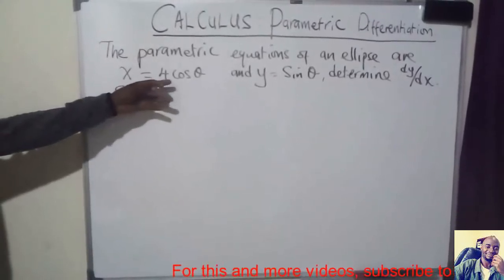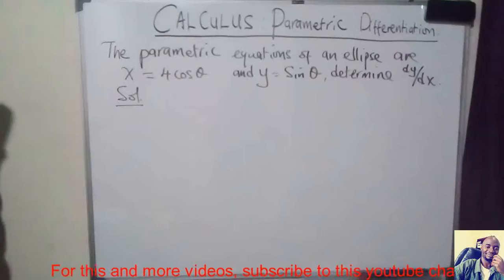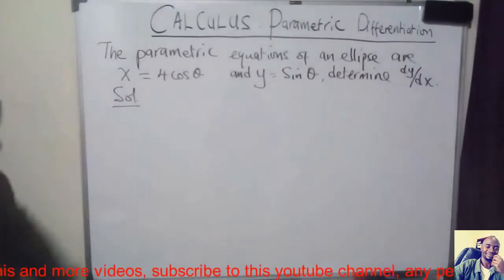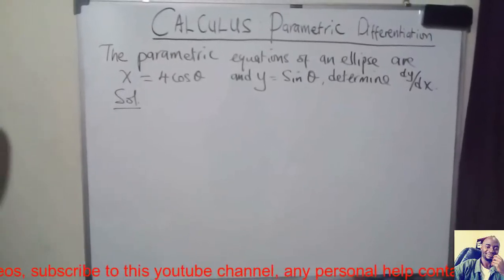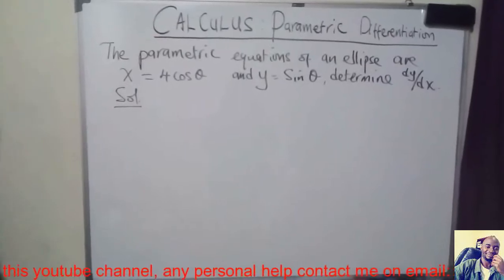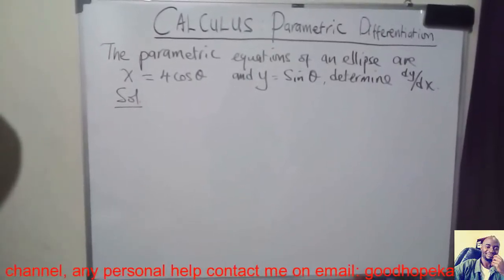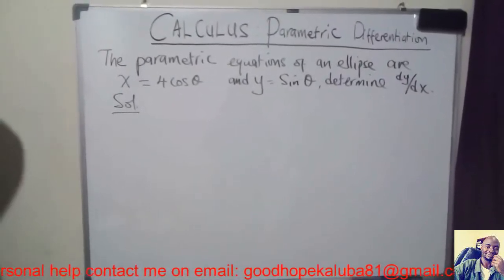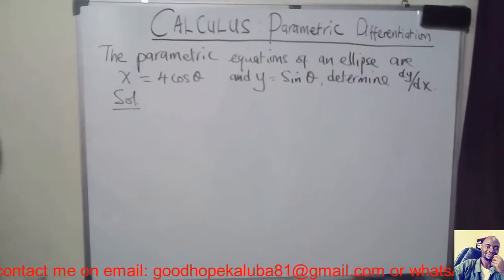x is presented in terms of theta and y is presented in terms of theta, so these are two parametric equations. We have other shapes or curves that can be presented as parametric equations — the ellipse, the parabola, hyperbola, cardioids, asteroids, cycloids, and so on.